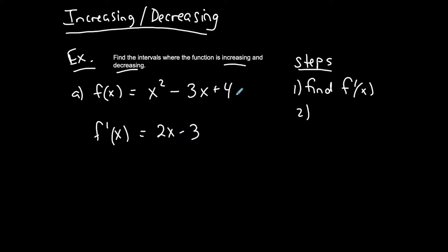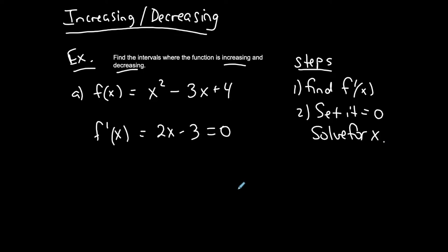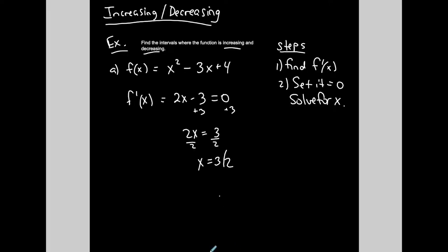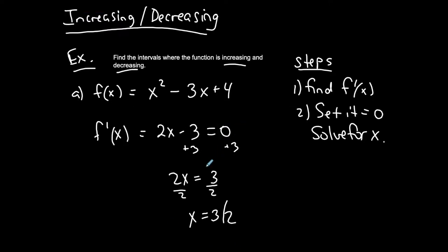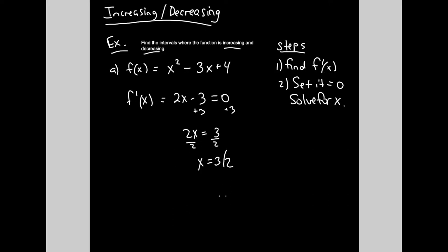If you're not sure how to find the derivative, you'll need to look at one of my other videos and practice that. The second step is to set the first derivative equal to 0 and solve for x. Adding 3 to both sides gives 2x equals 3, so x equals 3 halves. These are called critical values — anything from where the first derivative equals 0 is a critical value. This one has only one.